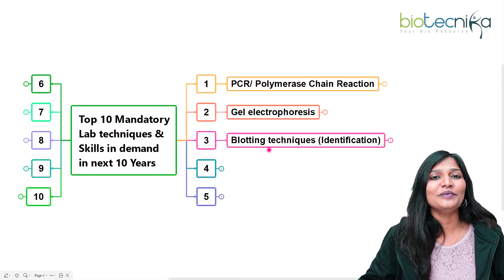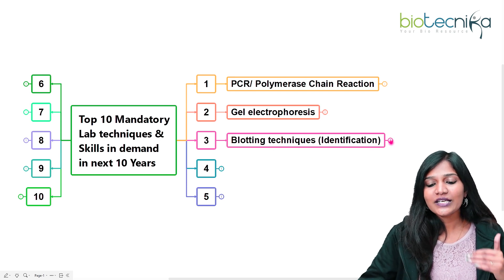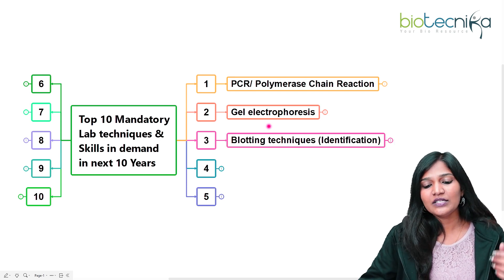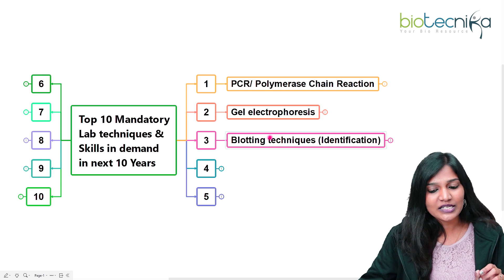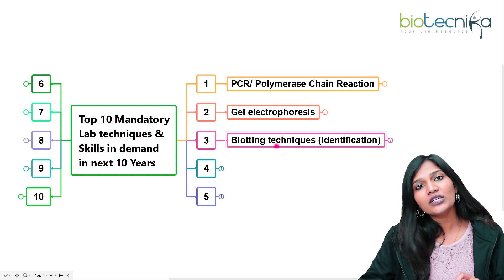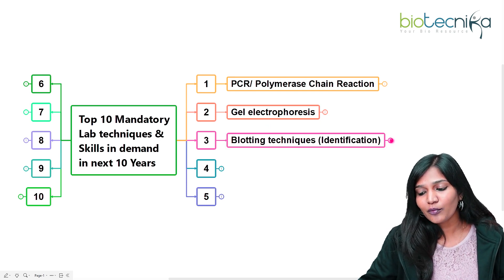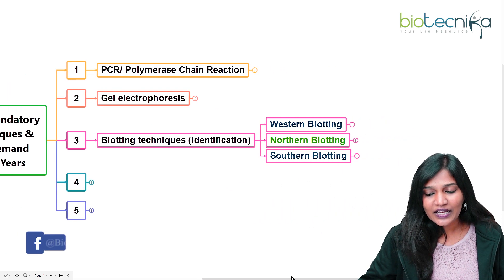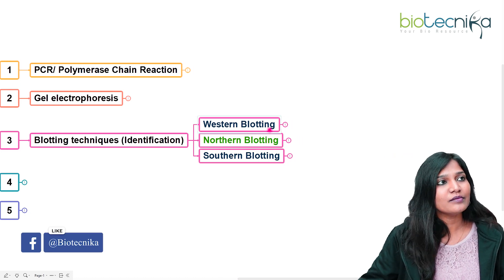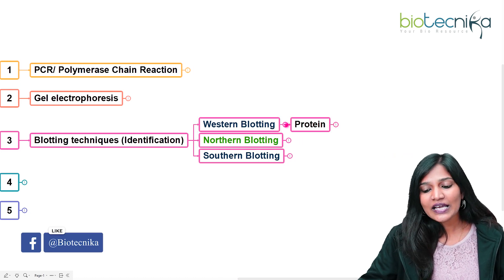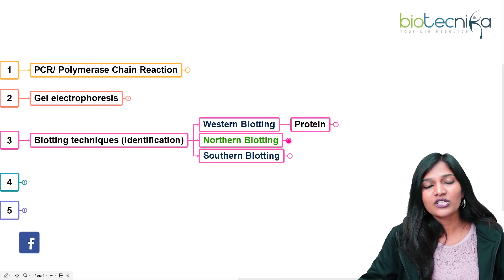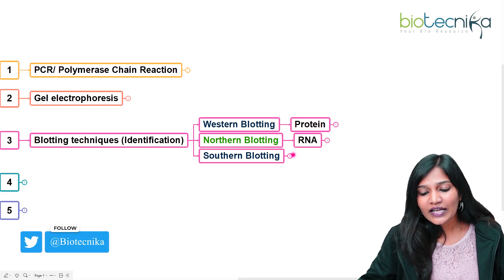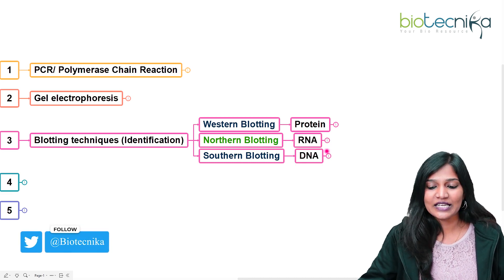The third technique is blotting. Blotting and gel electrophoresis are very different — gel electrophoresis is for separating, while blotting is for identification of biomolecules like DNA, RNA, and protein. Western blotting is for proteins, northern blotting is for RNA, and southern blotting is for DNA.